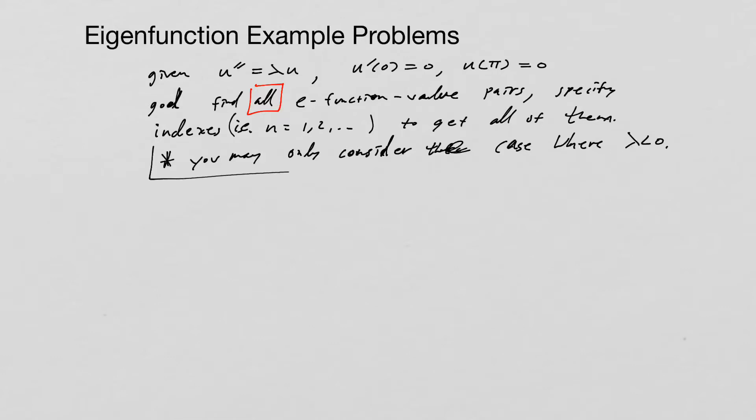So this case where lambda is less than zero, that's a time saver. It helps you be more efficient in your work that you don't have to look at the other cases. So it just minimizes the amount of work that you're doing. All right, so let's start this problem.